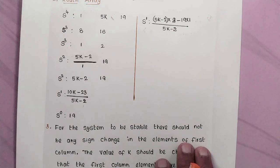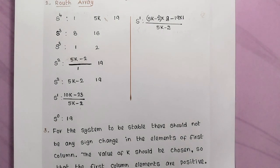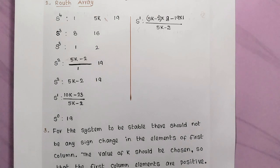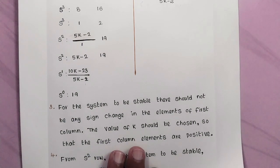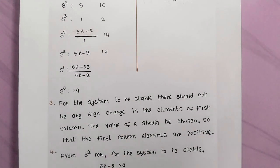Now finding the elements of the s¹ row. There is only one element: (5k − 2) × 2 − 19 × 1, all divided by (5k − 2), which simplifies to (10k − 23) / (5k − 2). The s⁰ row element is 19.